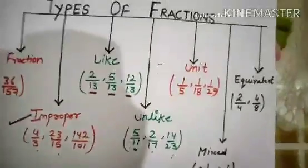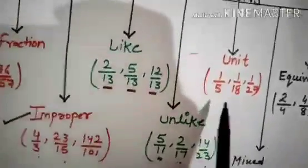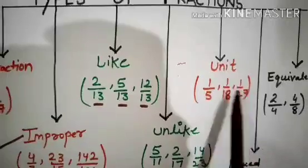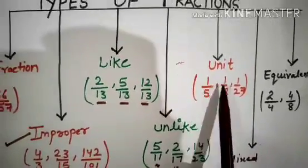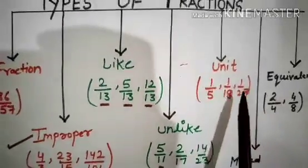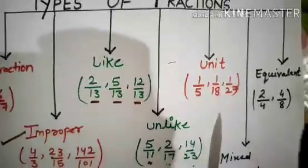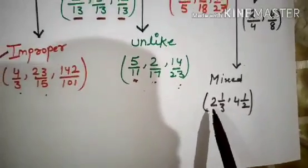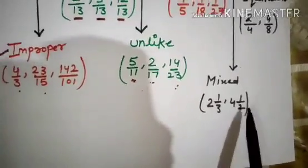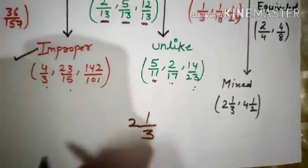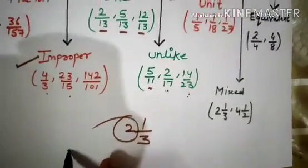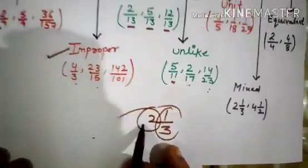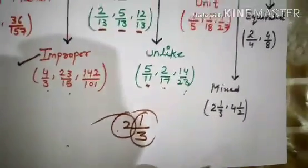The next type is a Unit Fraction — a Fraction having the numerator 1 is called a Unit Fraction. Examples: 1 by 5, 1 by 18, 1 by 27 — in all these Fractions, the numerator is 1. The next type is a Mixed Fraction — a Fraction having a whole number and a proper fraction together, such as 2 and 1 by 3. Here 2 is the whole number and 1 by 3 is the proper fraction. This mixture is called the Mixed Fraction.